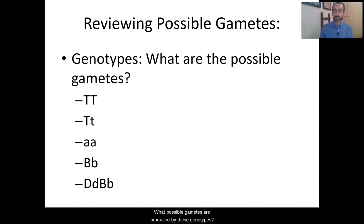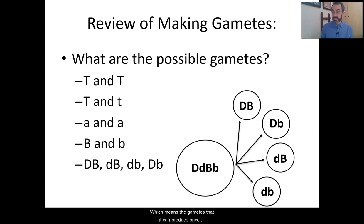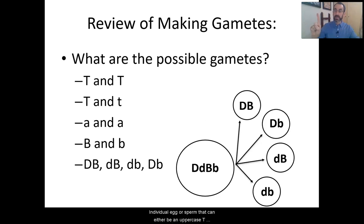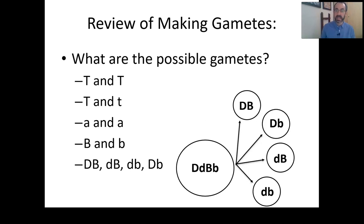Let's check your work — the possible gametes for these genotypes. The first one is homozygous dominant, meaning that individual has two uppercase T alleles. The gametes it can produce are uppercase T or uppercase T. The next one is heterozygous for the T gene — uppercase T and lowercase T — so it can produce gametes with uppercase T or lowercase T. The third is homozygous recessive, with all lowercase alleles, so it produces lowercase A gametes.